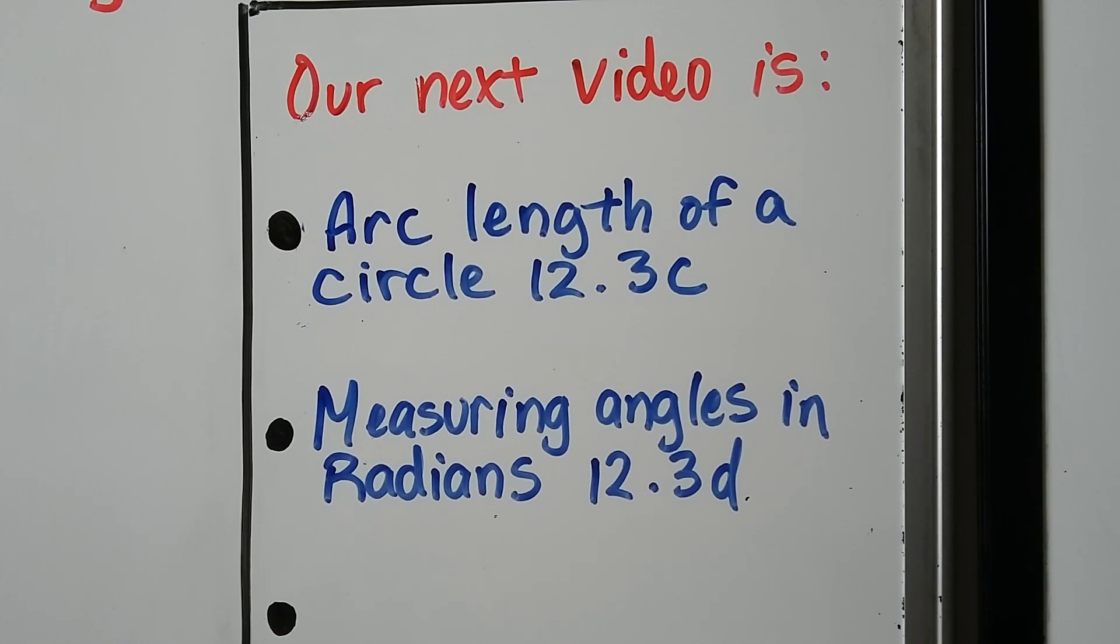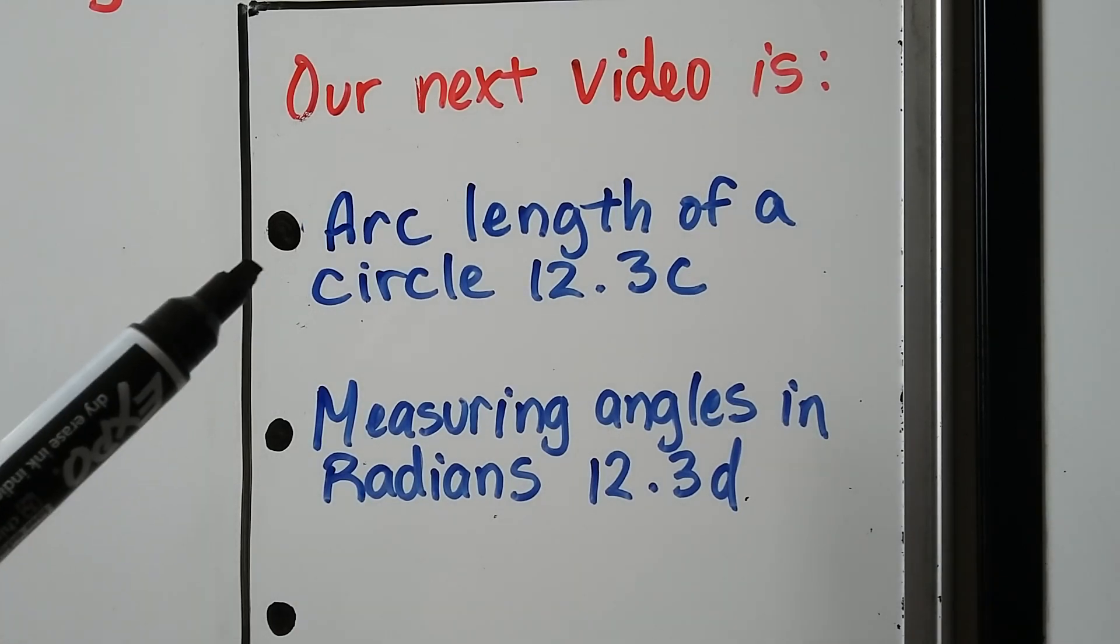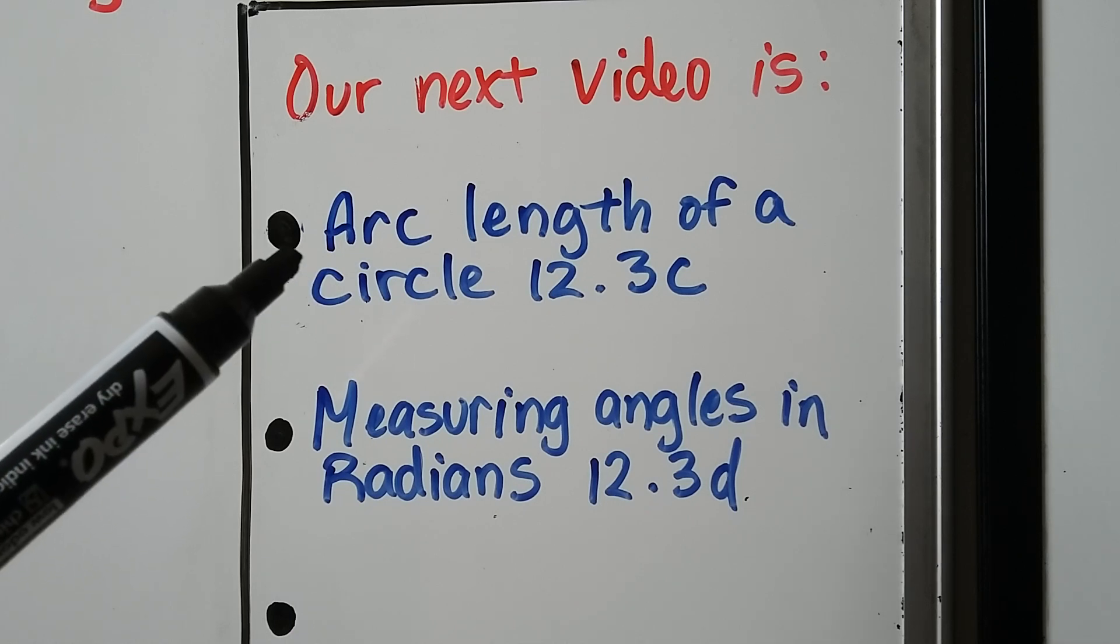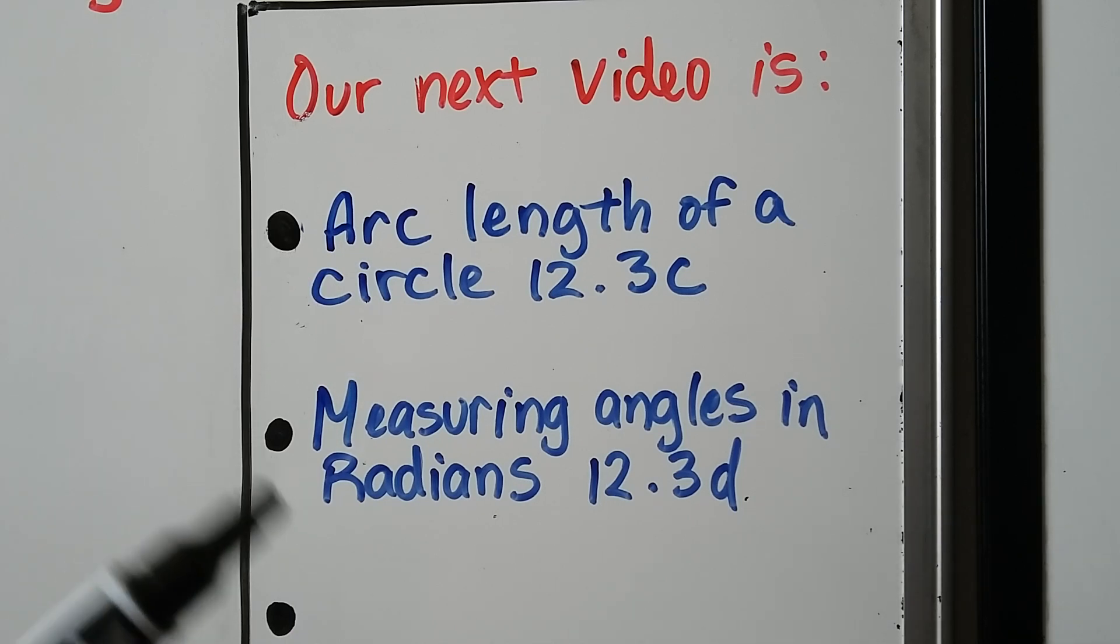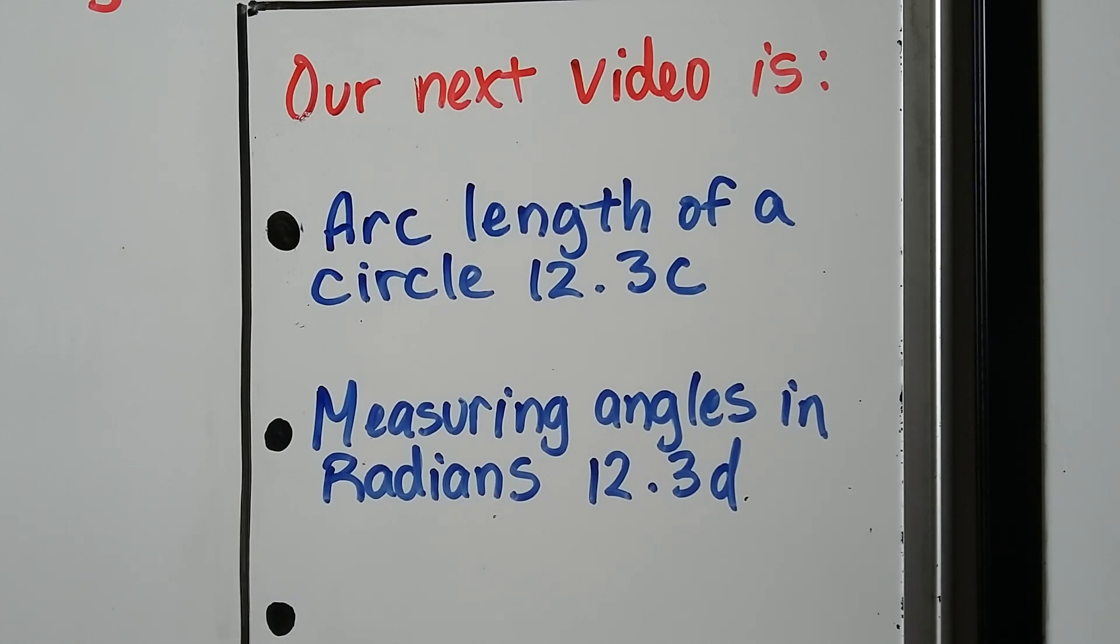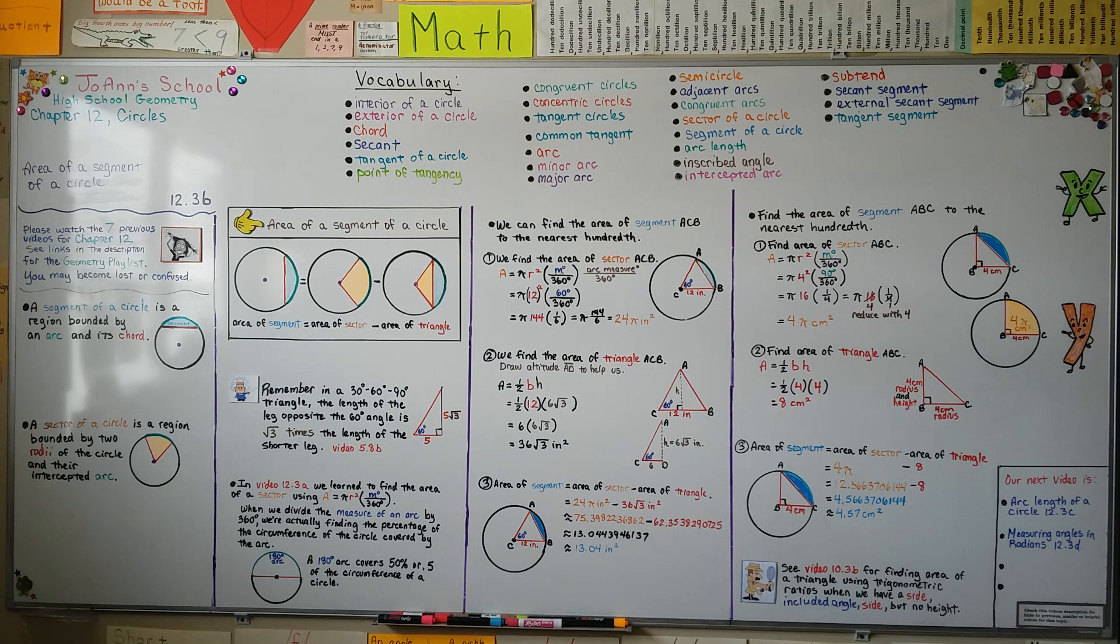Now we talked about arc length a little bit in 12.3a. We're going to go over it again in the third part of 12.3, 12.3c. And then we're going to talk about measuring angles and radians in 12.3d. So now you can try finding the area of a segment of a circle on your own. And I hope my explanation was good enough so that you can do it on your own. And I'll see you for the third part of this lesson and have a great day. Bye.